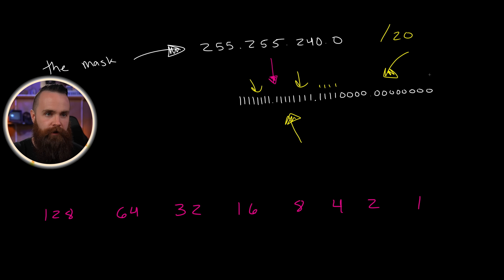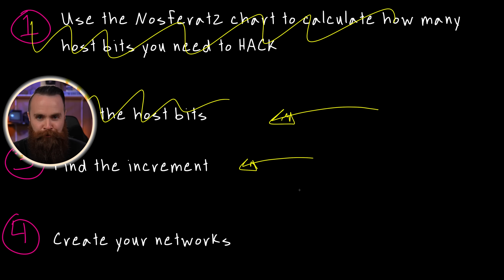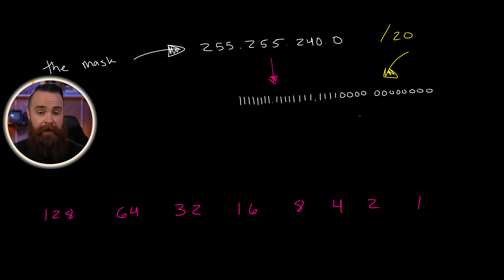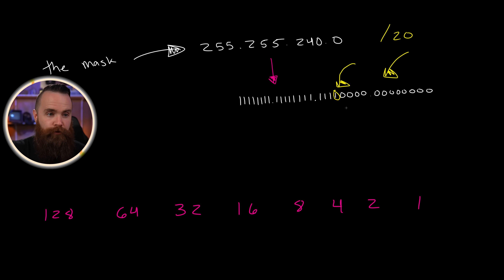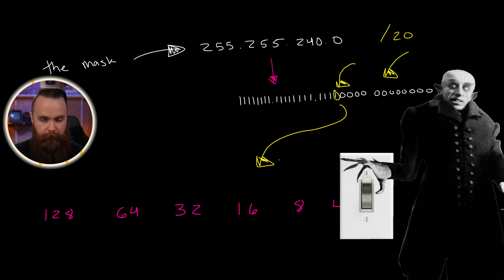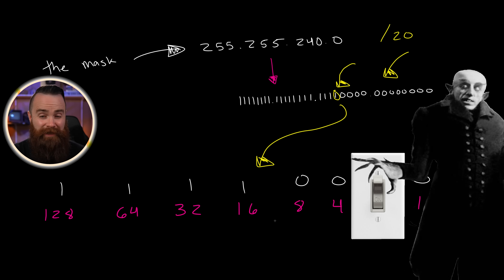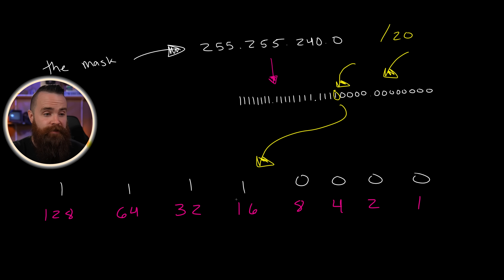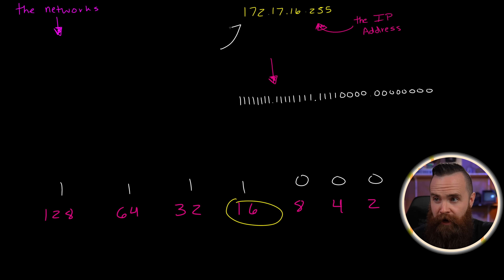Step three: find the increment. The increment is the last network bit in our subnet mask. Throwing that octet onto our Nosferatu chart, we can see our last network bit represents 16. So 16 is our increment, and with that we can now build our network ranges.